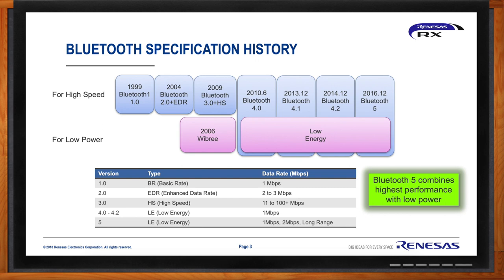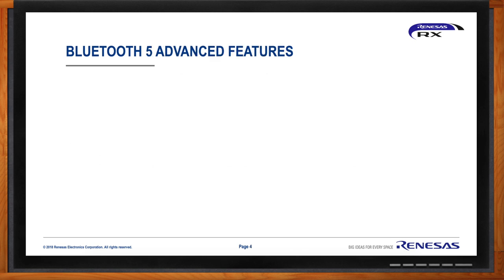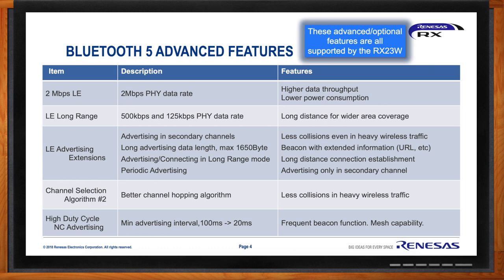A lot of people claim Bluetooth capability, but that can mean a lot of things. The Bluetooth 5 spec makes a lot of features optional, and many advanced features are not included on simple Bluetooth devices. But the RX23W supports all of the advanced features. Some of the really key ones are LE long range, which allows much wider area coverage and further distance between the MCU and its connection point, as well as channel selection algorithm, which reduces collisions in heavy traffic situations. These new features allow you to increase performance even beyond the standard Bluetooth 5 specification.